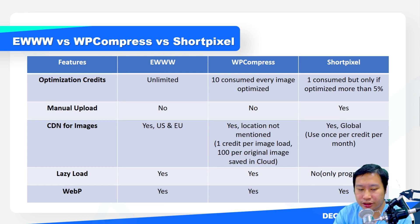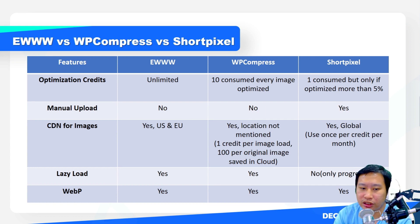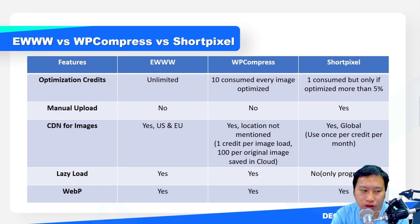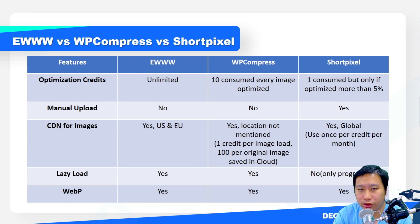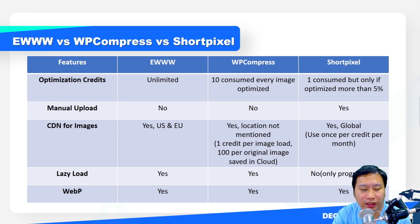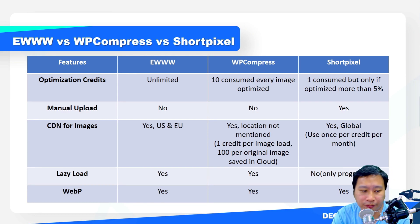For Short Pixel, their CDN is global and every month it just uses one credit per image whenever it's being loaded. I should also mention that for Ewww, they don't use a credit-based system for CDN — they give you bandwidth based on your plan. If you use up that bandwidth, the CDN stops working.